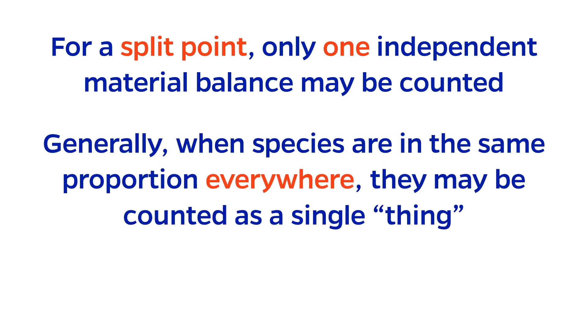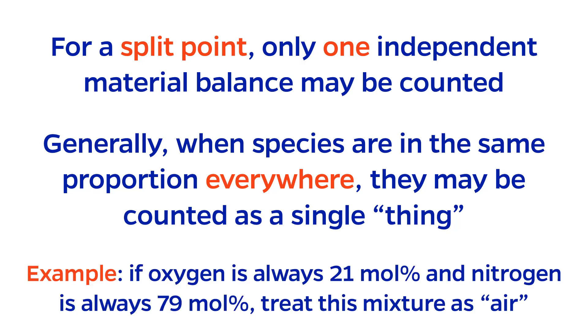Generally, when species are in the same proportion everywhere in the process, they can be counted as a single thing, rather than the separate components that make them up. This is often times seen with air. If there is no perturbation to the amounts of oxygen or nitrogen, then it is okay to treat air as a single chemical when performing a material balance.